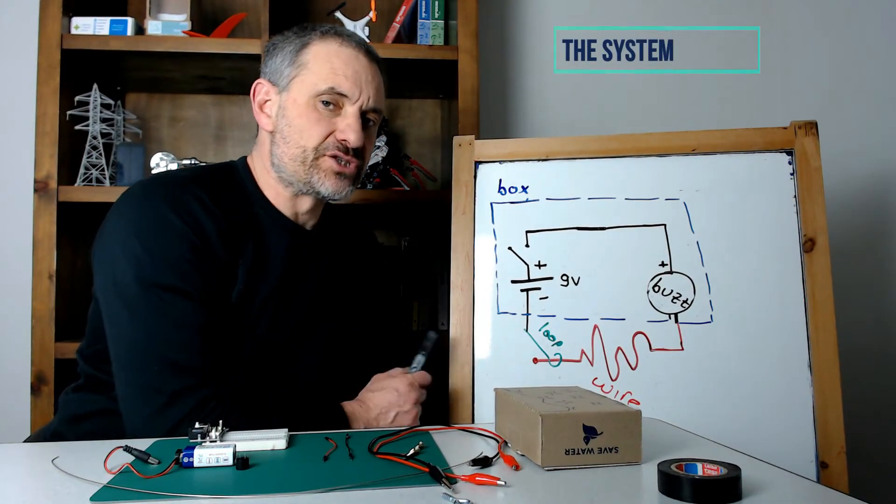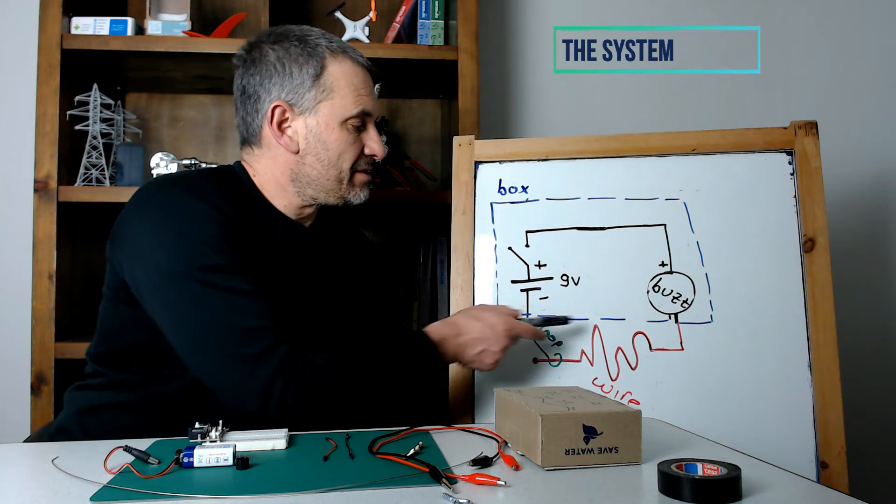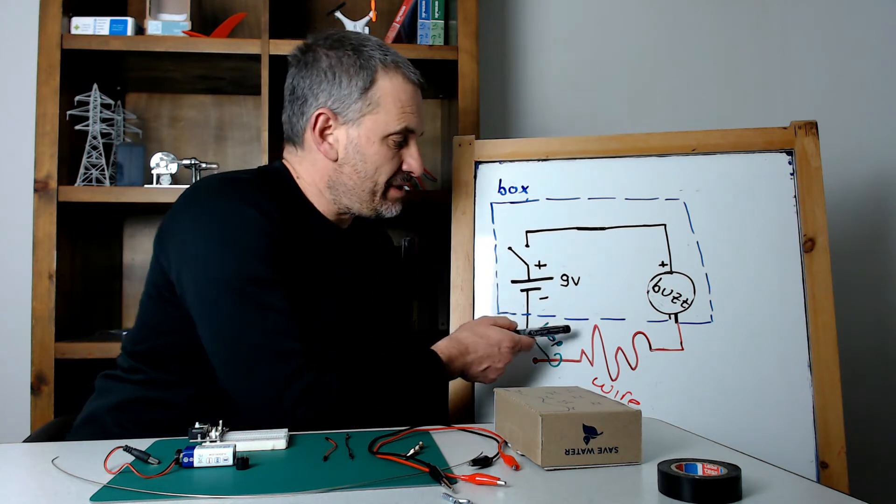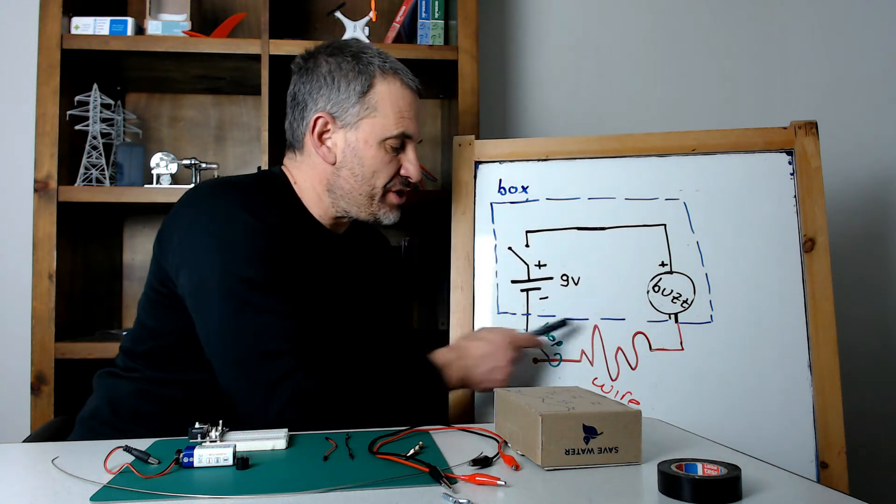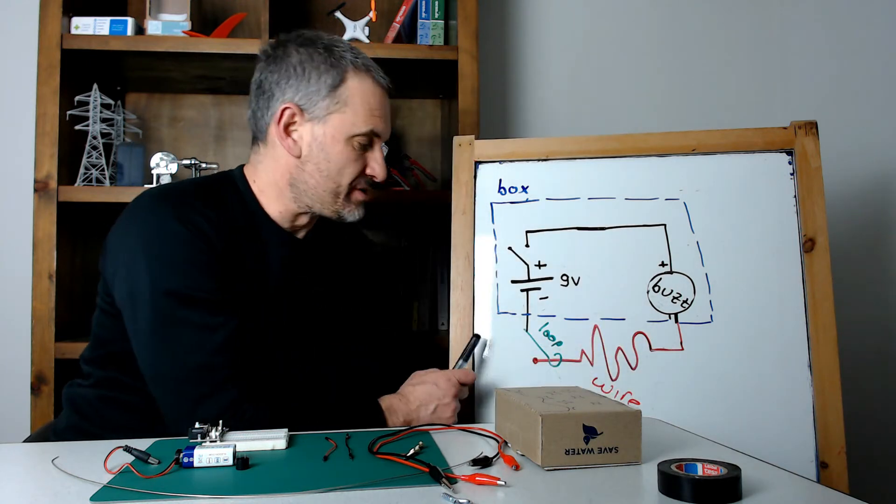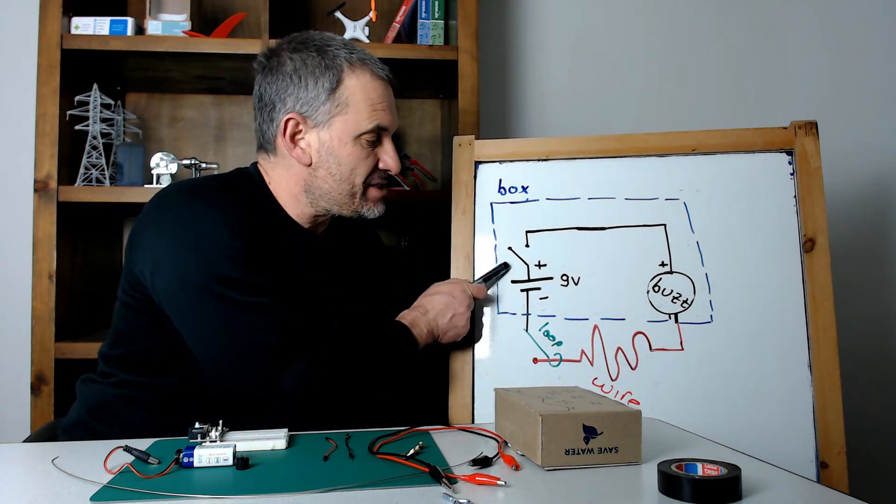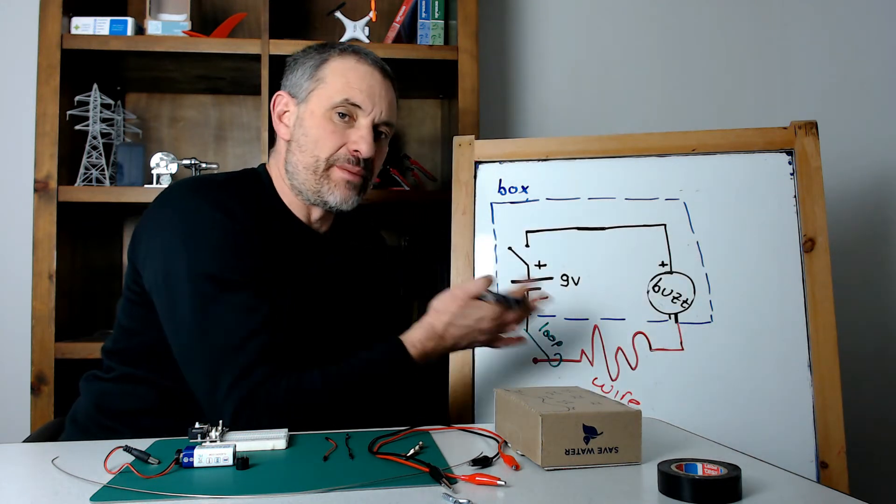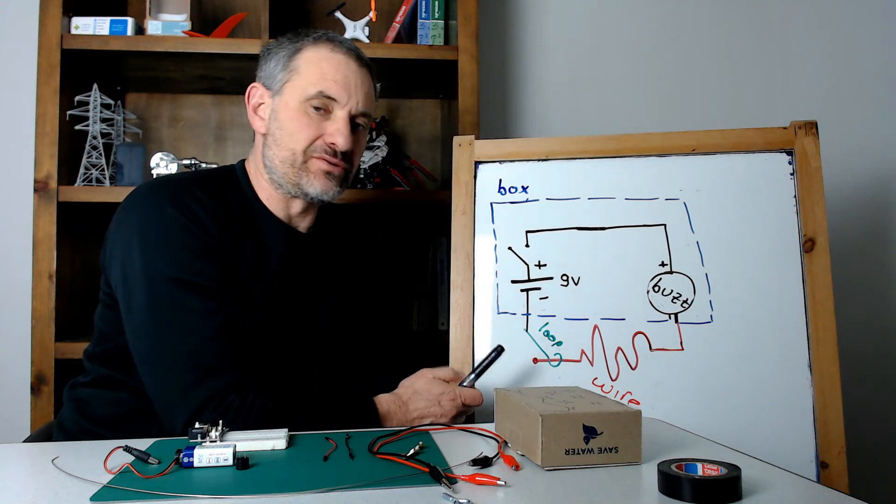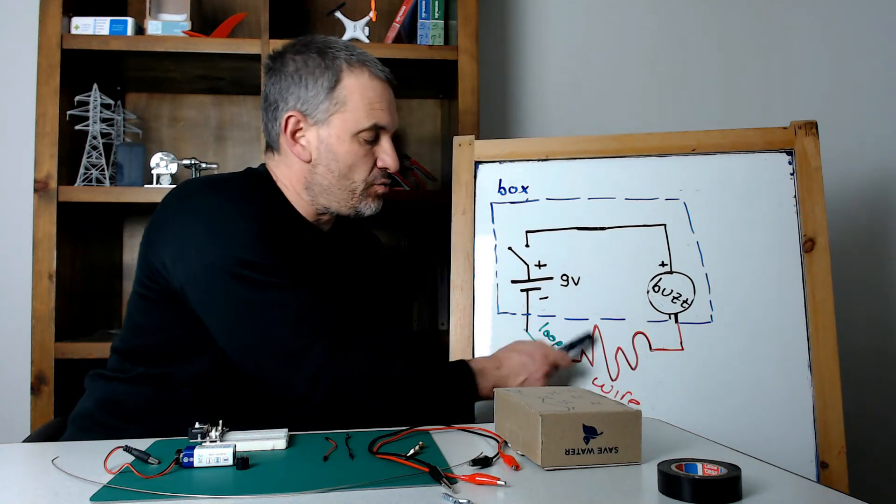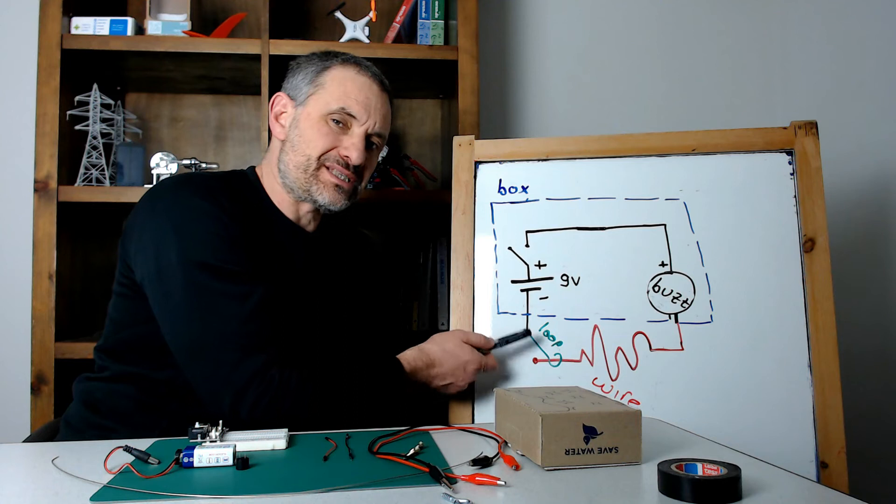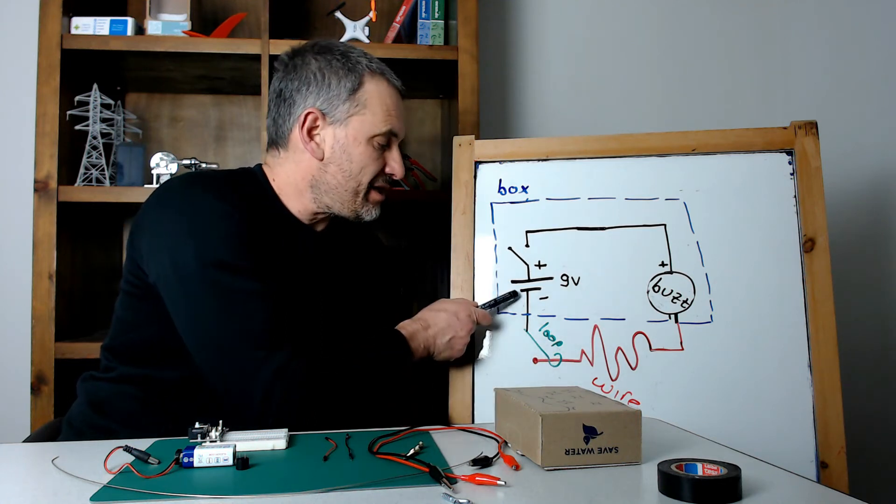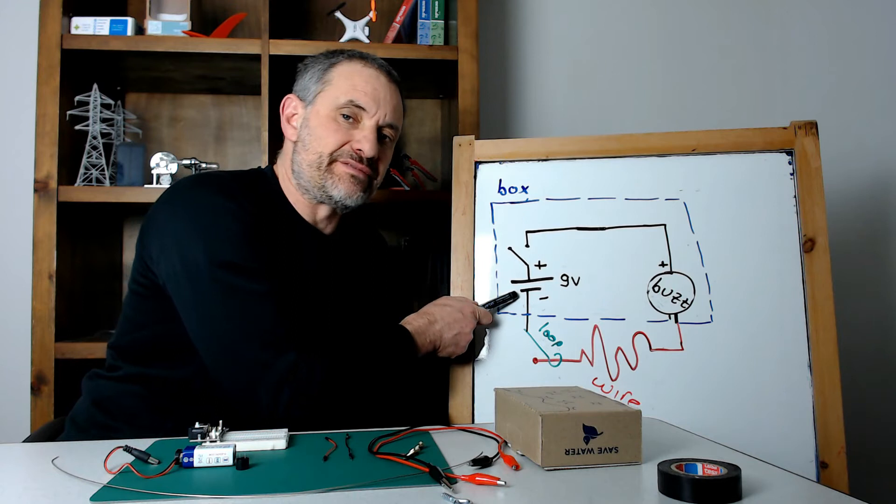I tried to illustrate in this drawing which parts of the system would be hidden within a box and which would be exposed to the user. As you can see, the battery, switch and buzzer are all inside the box. The only parts that the user would be able to see are the bent wire and the loop that's connected using a flexible wire to the negative side of the battery.